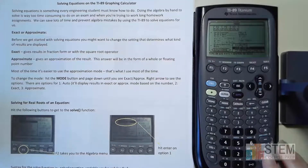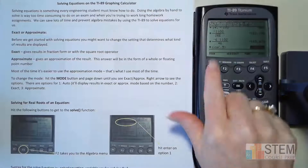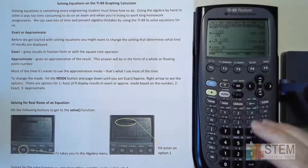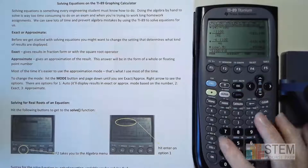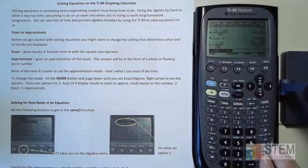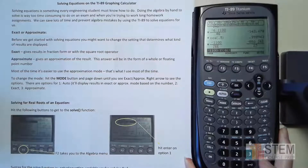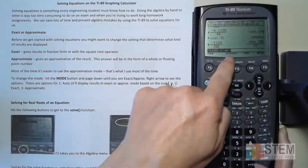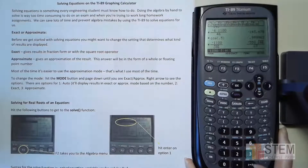Let's look at exact mode — it gives everything with fractions. So let's put in negative 1100 divided by the square root of 46. The result is negative 550 times the square root of 46 over 23. I don't know about y'all, but that is not very informative. That's what exact mode gives you, and you can see it says 'exact' right there on the screen.